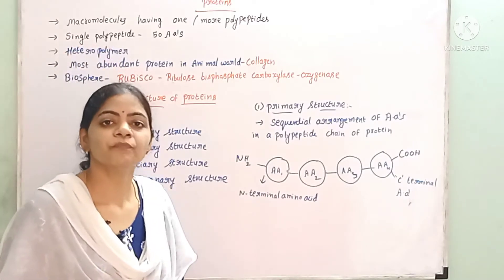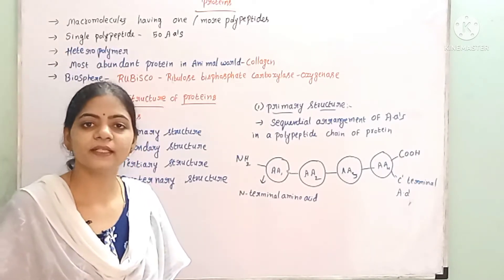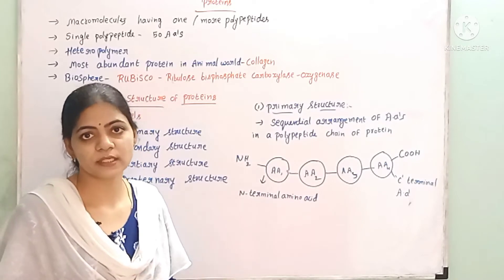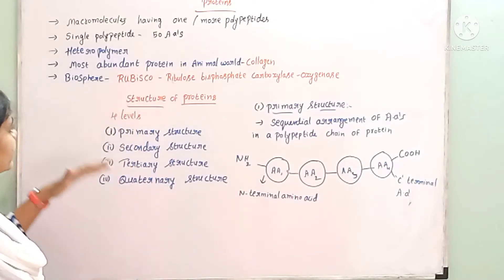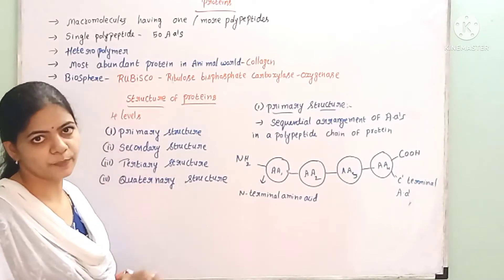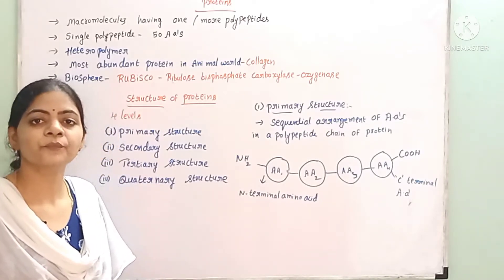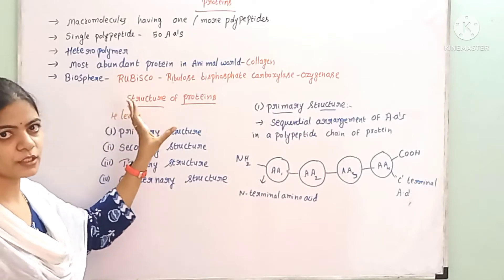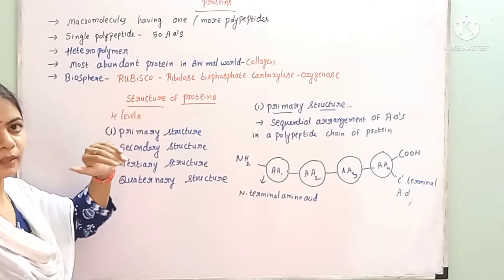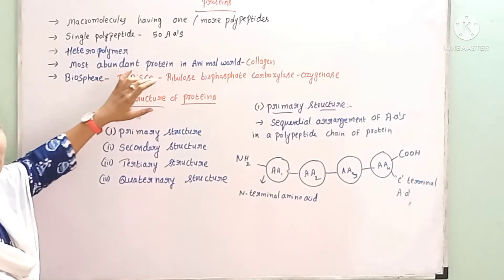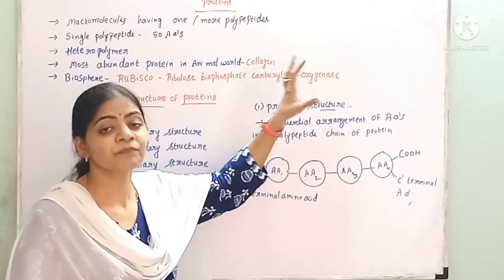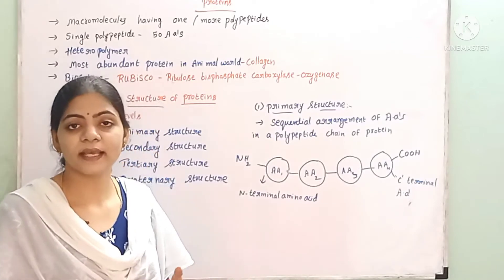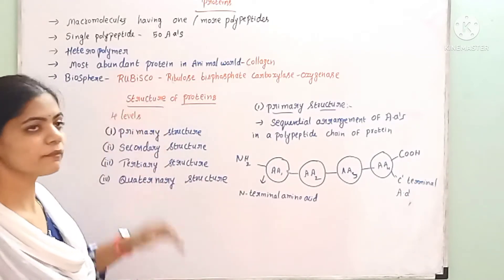In the animal world, the most abundant protein is collagen, which is mostly present in the connective tissue of the animal body. On the biosphere, on earth, the most abundant protein is Rubisco. Rubisco is actually an enzyme — all enzymes are proteins. Rubisco stands for ribulose bisphosphate carboxylase oxygenase. This is the enzyme involved in carbon fixation; during photosynthesis, carbon dioxide is converted into glucose by means of this enzyme Rubisco.